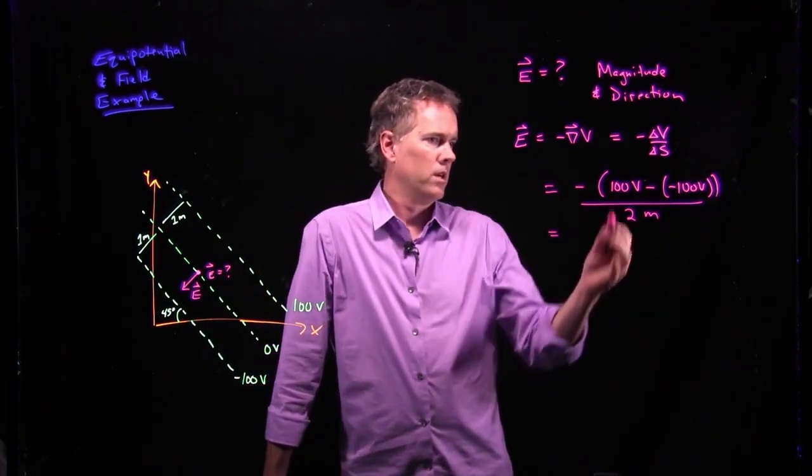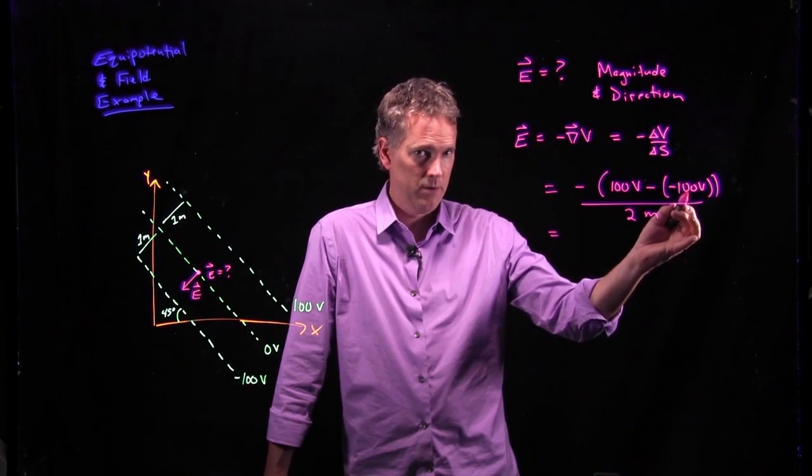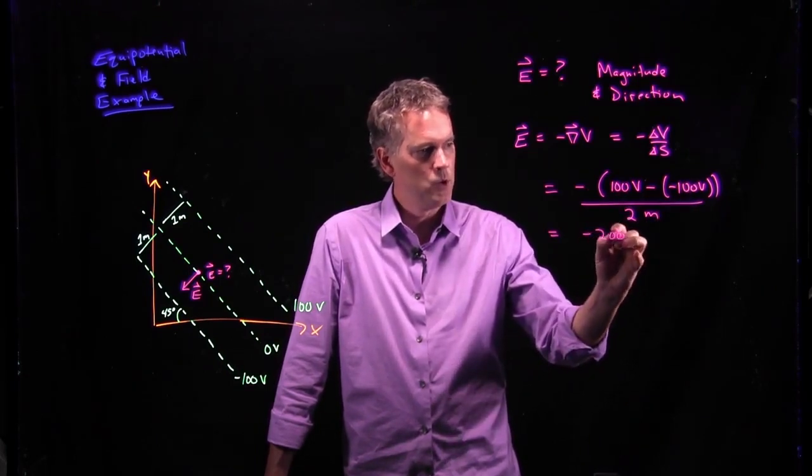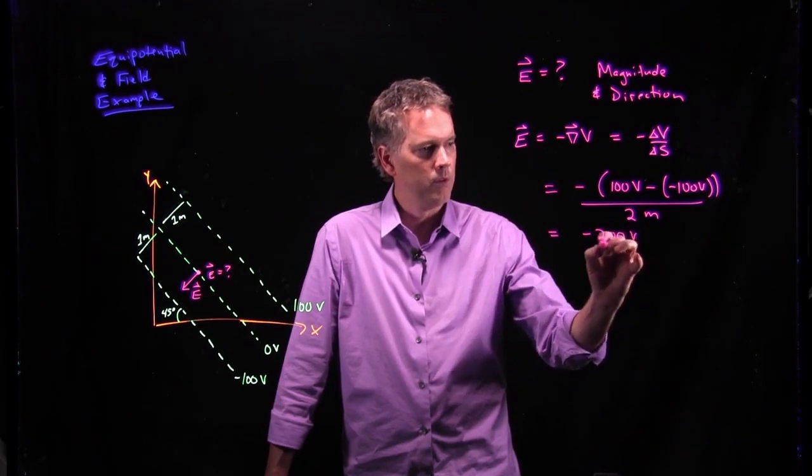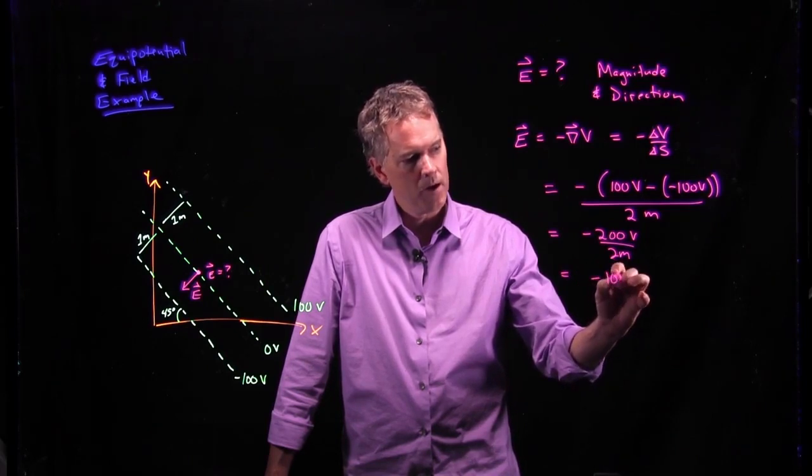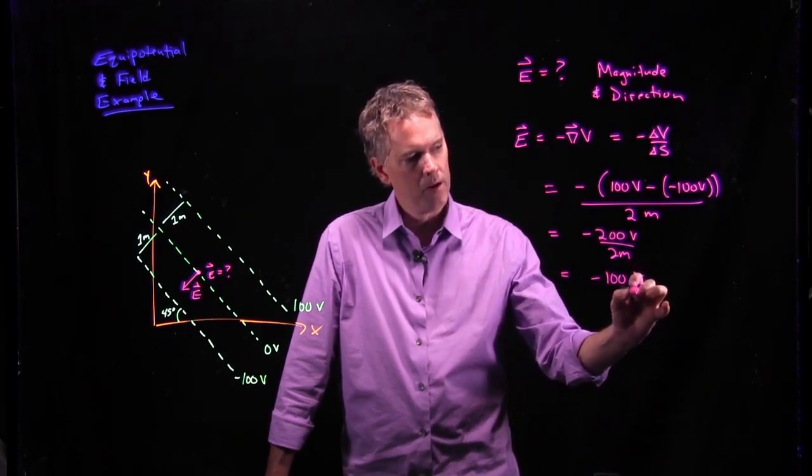100 plus 100, negative of that is negative 200 volts per 2 meters. So that is negative 100 volts per meter.